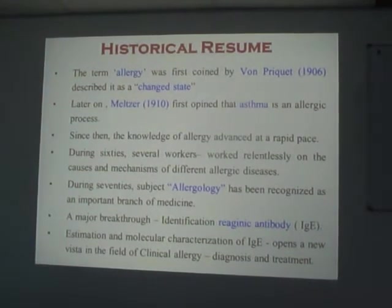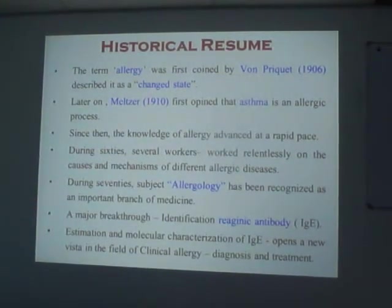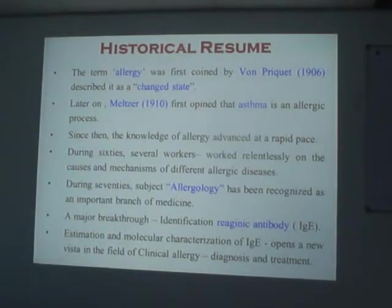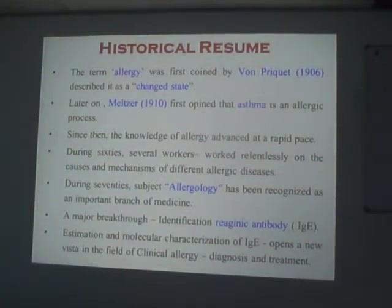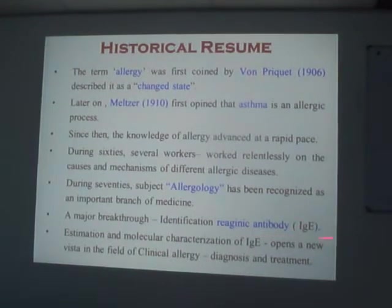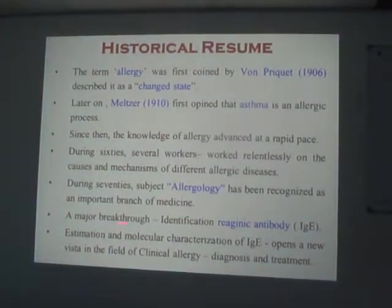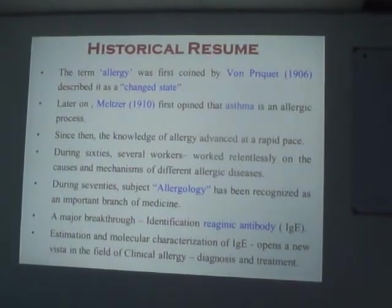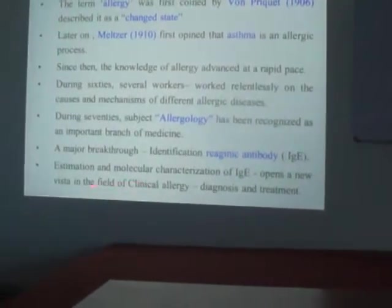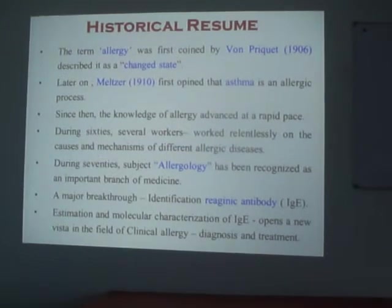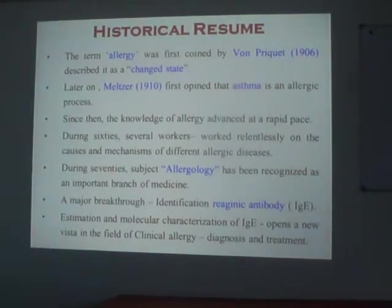Professor Johansson at Liden, Sweden, and parallelly Professor Ishizaka from Japan — in the year 1967 — jointly published on the present fourth or fifth category of antibody, known as IgE antibody. After the methods of estimation and molecular characterization of this IgE antibody, it opened a new vista in the field of clinical allergy — that is, diagnosis and treatment. We can safely conclude that it is a newer branch of science.